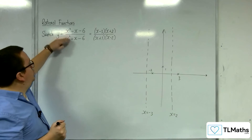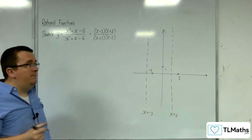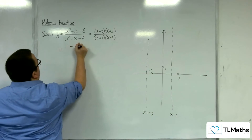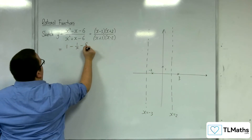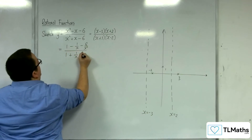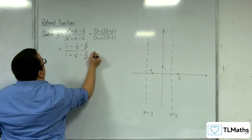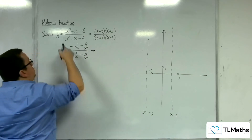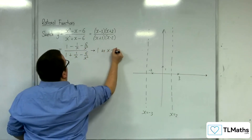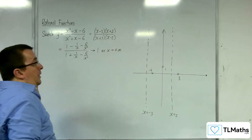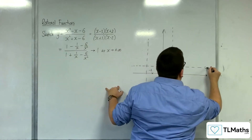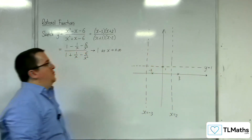How about the horizontal asymptote? Well, the order of the polynomial on the top and the bottom is the same. So, dividing through by x squared, we would get 1 − 1/x − 6/x² over 1 + 1/x − 6/x², which tends to 1 over 1 as x tends to plus or minus infinity. So, y equals 1 is going to be a horizontal asymptote.